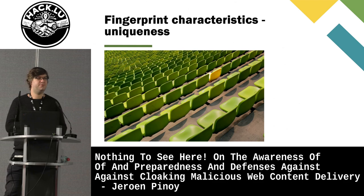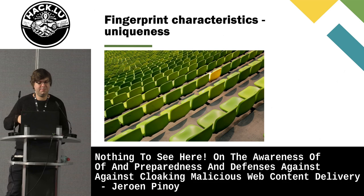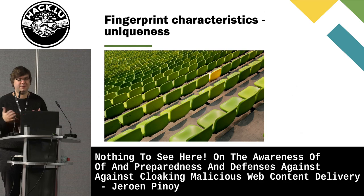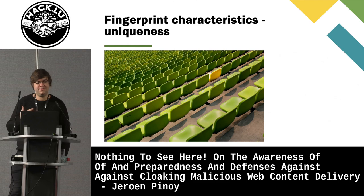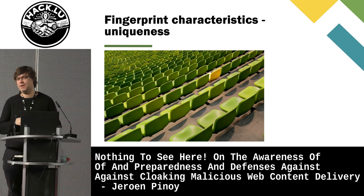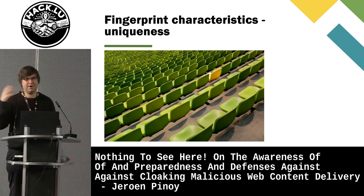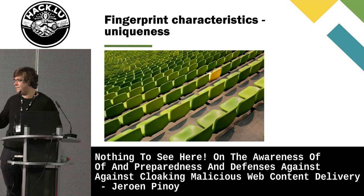There are two main characteristics of fingerprints. The first is uniqueness: the fingerprint has to be unique, so if you stand out, it's easier to fingerprint you. For example, a yellow chair is immediately found, but pointing to one green chair among many is harder. This is the basis for one counter-strategy used by Tor Browser: making your browser look as close to other Tor browsers as possible without breaking functionality — a strategy called conformity.